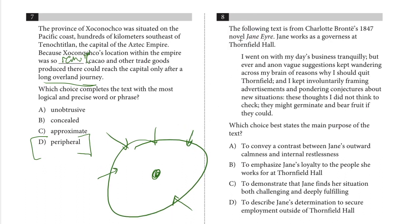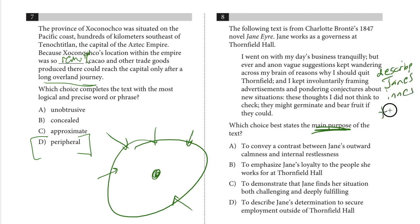Moving on to an assortment of reading comprehension questions. The main purpose: Jane works as a governess at Thornfield Hall. She goes on with her day's business tranquilly, but vague suggestions keep wandering across her brain about reasons why she should quit Thornfield. She keeps involuntarily framing advertisements and pondering conjectures about new situations, thinking she might let these thoughts germinate and bear fruit. The main purpose is to describe Jane's inner thoughts, more specifically about Thornfield.